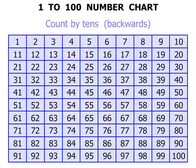What about counting by tens but this time backwards? Starting from 100: 90, 80, 70, 60, 50, 40, 30, 20, and 10.